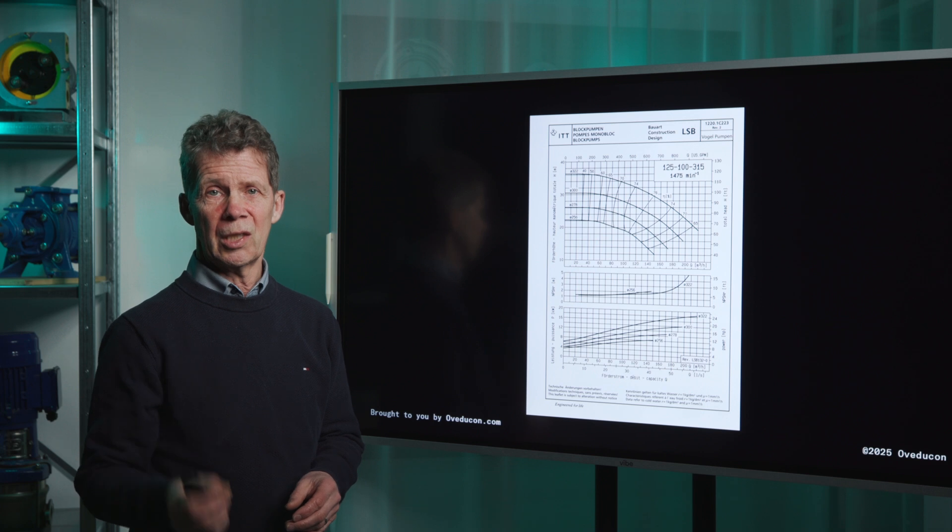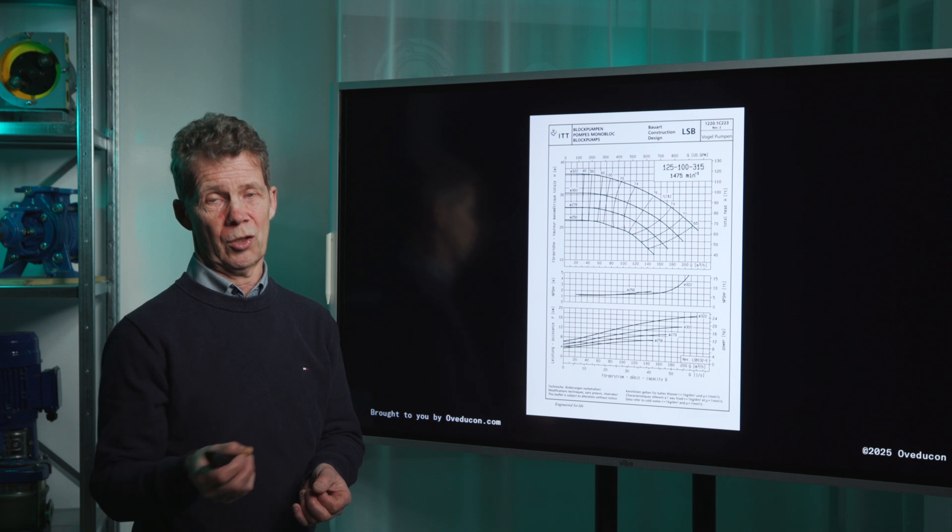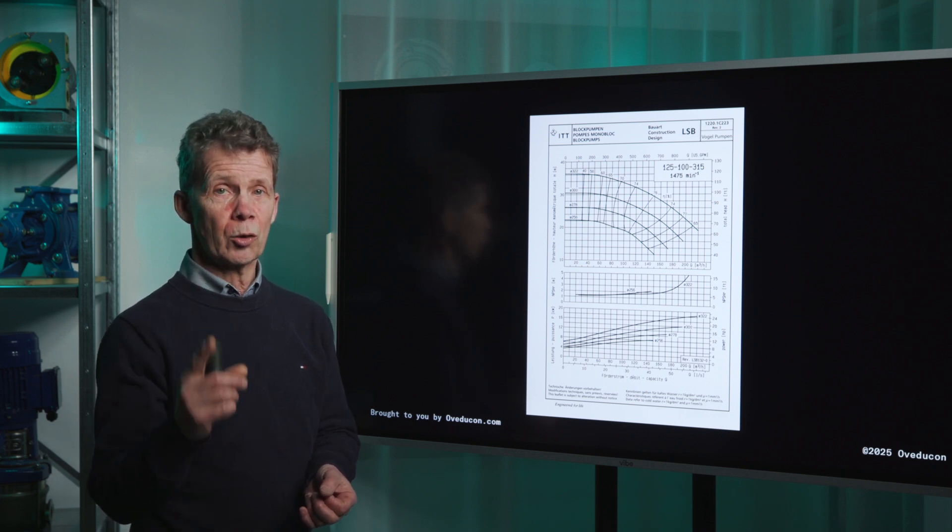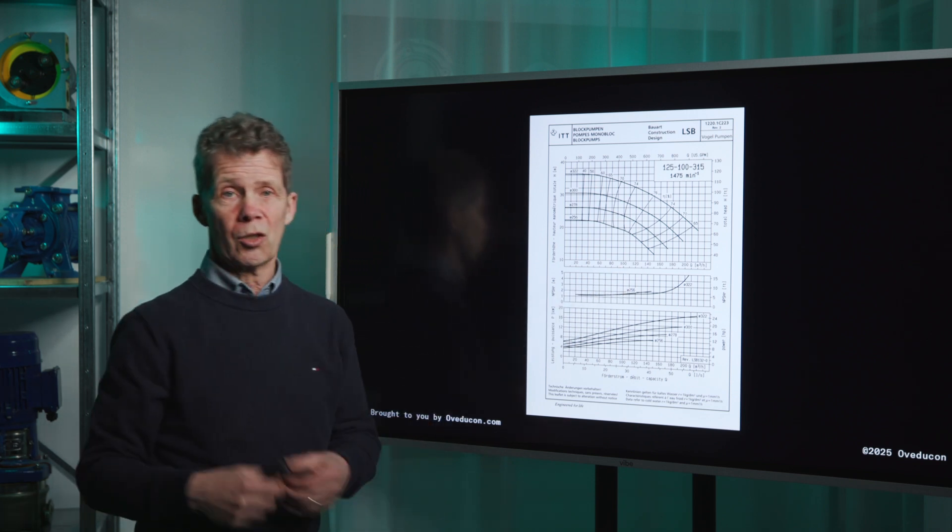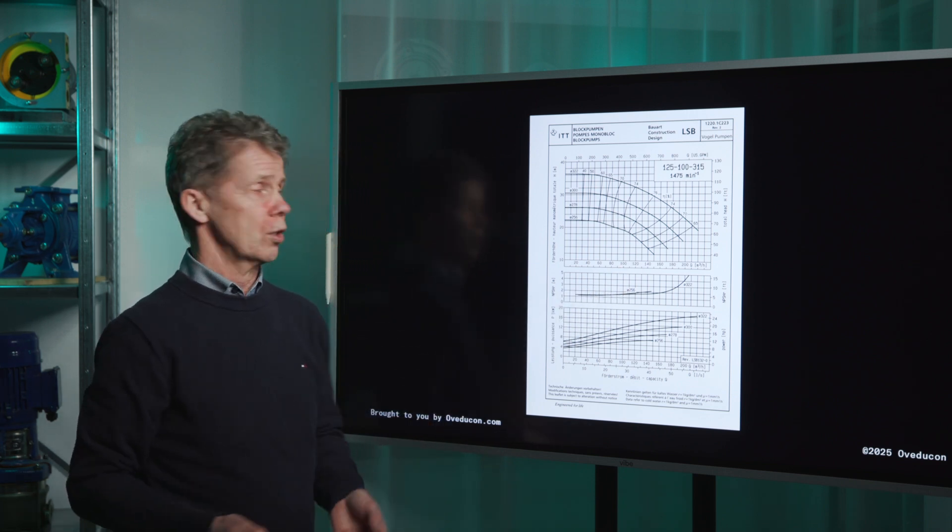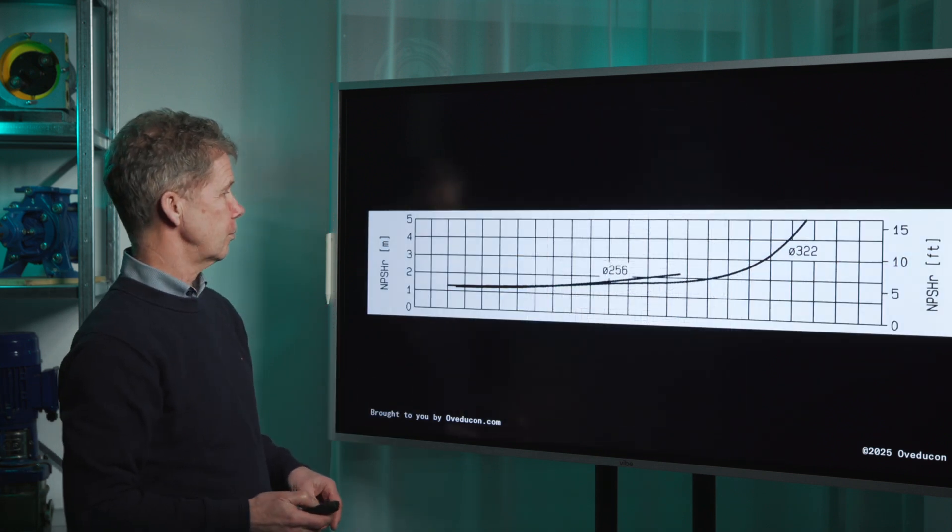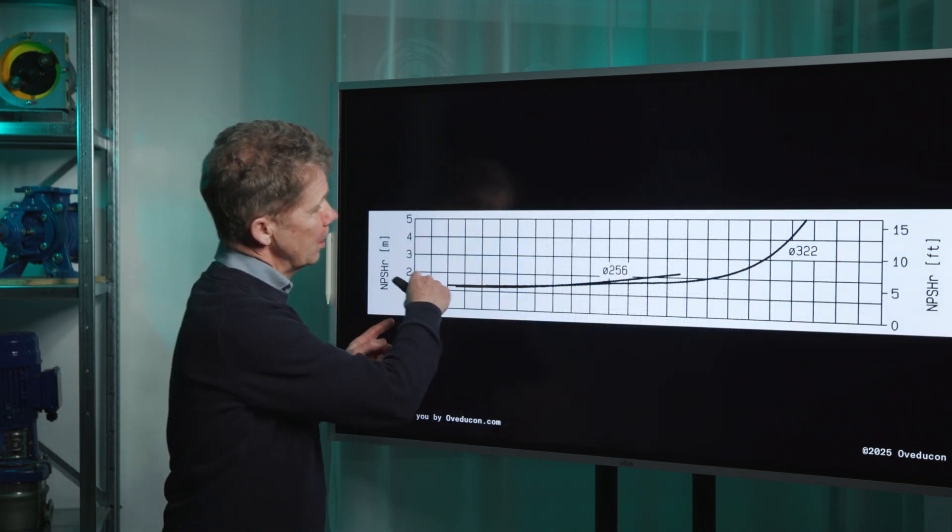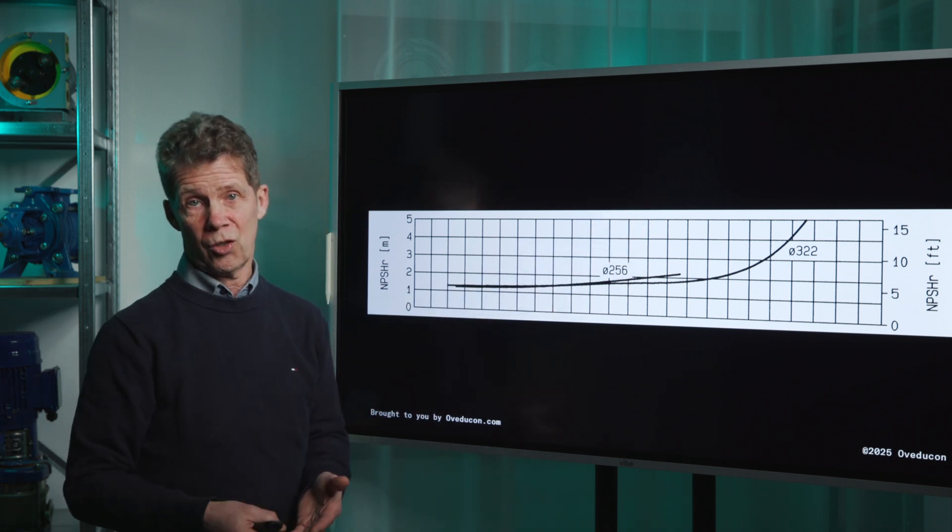The first thing is that an NPSH required curve never starts at zero capacity. And there's only one curve block. The middle one. Where the curves are not starting at zero capacity. Let's enlarge this curve. Here you see that this NPSH required curve lines are not starting at zero capacity.